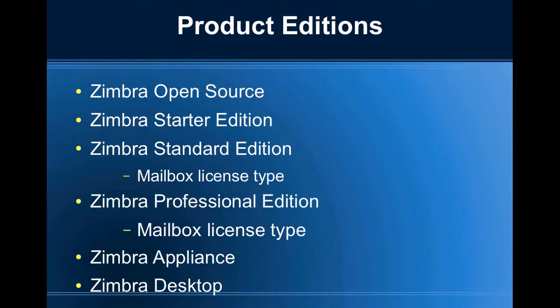Zimbra is available as an open source product, starter edition, the standard edition, professional edition and Zimbra appliance, as well as a Zimbra desktop product. The Zimbra standard edition and Zimbra professional edition are basically just mailbox license types and they can be mixed and matched with the same Zimbra installation.